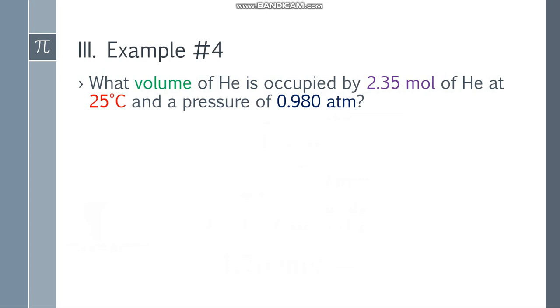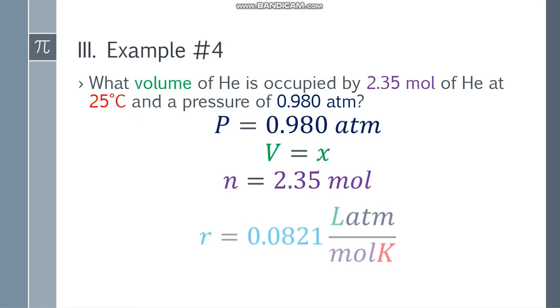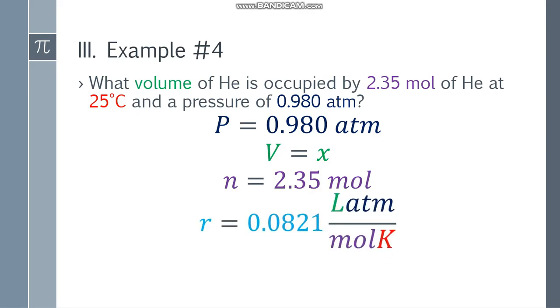Let's move on to example number 4. What volume of helium is occupied by 2.35 moles of helium at 25 degrees Celsius and a pressure of 0.980 atmosphere? Lagin natin yung given. Pressure is equal to 0.980 atm. Volume hindi natin alam, so x muna. Ang n that will be 2.35 moles. At ang r will be 0.0821. Ngayon, ang temperature natin that will be 25 degrees Celsius. Naka Celsius siya. Kailangan natin yung Kelvin. That will be 298.15 Kelvin.